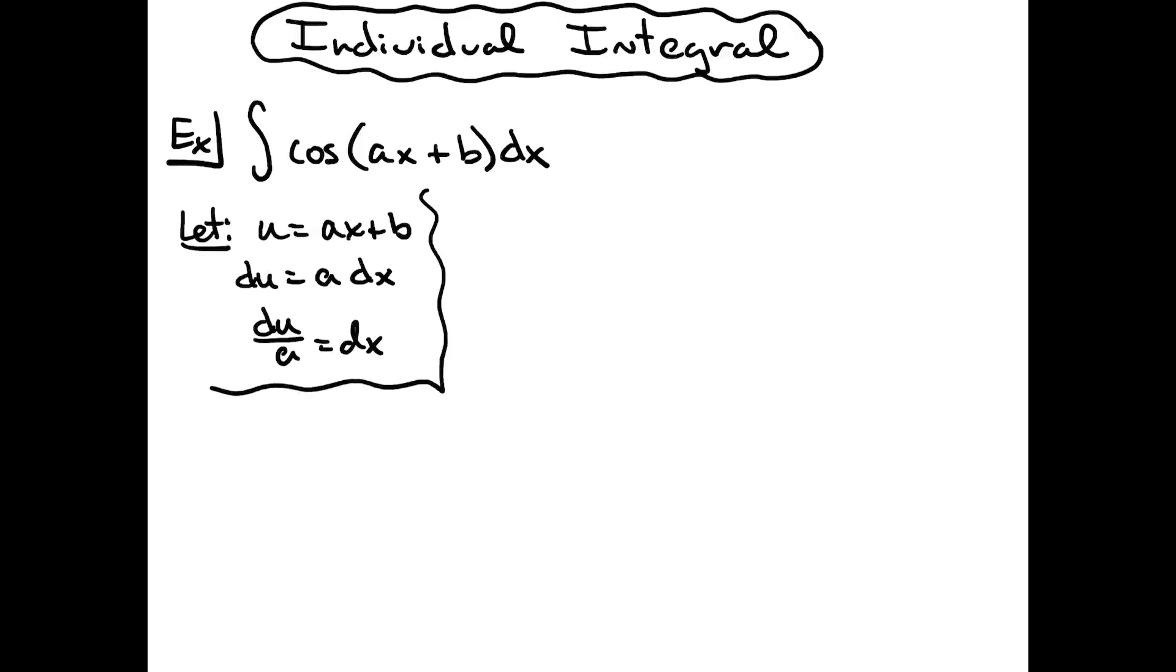I'm then going to come up to the original problem, and I'm going to do some substitutions. I'll have cosine. I'm going to replace ax plus b with the u. I'm going to replace the dx with the du over a.